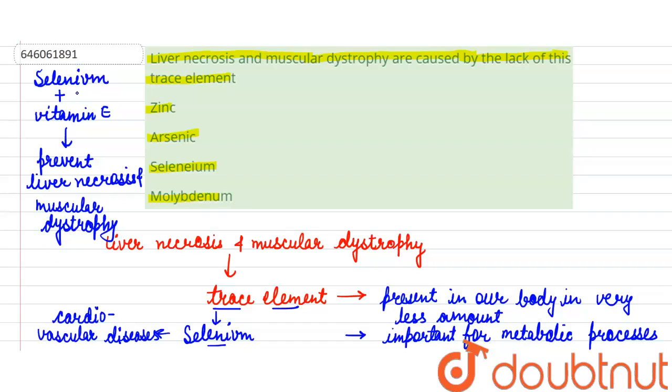Selenium can easily be obtained from non-vegetarian diet, that is from meat of liver and kidney, as well as from seafood.